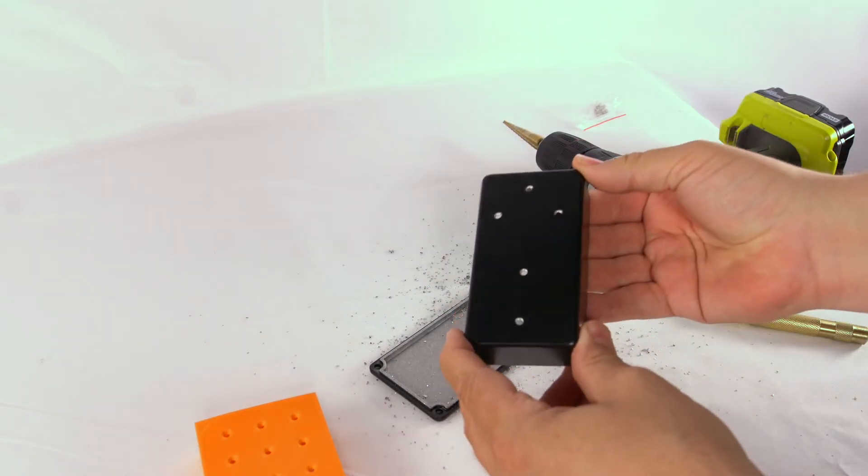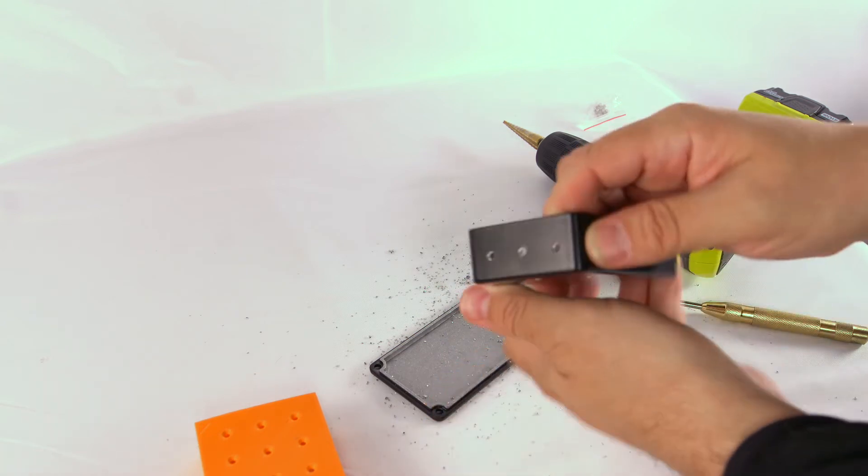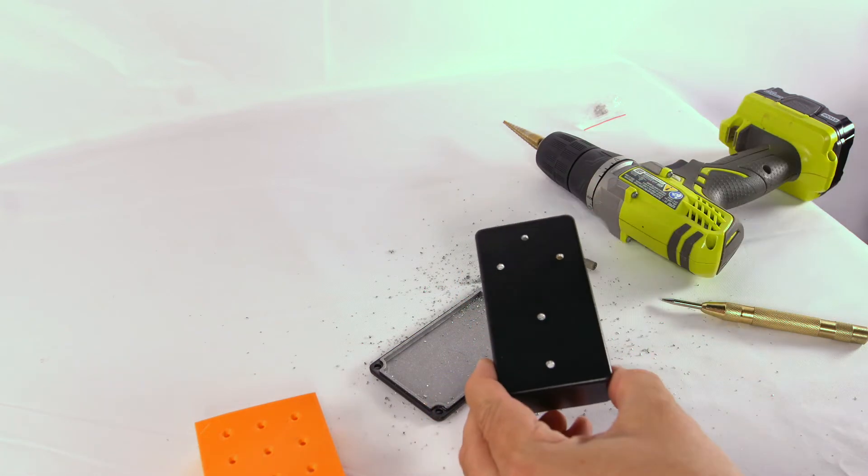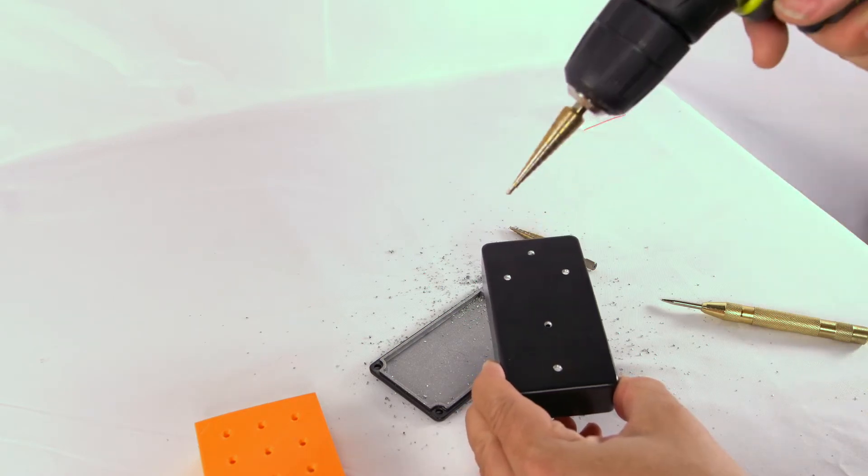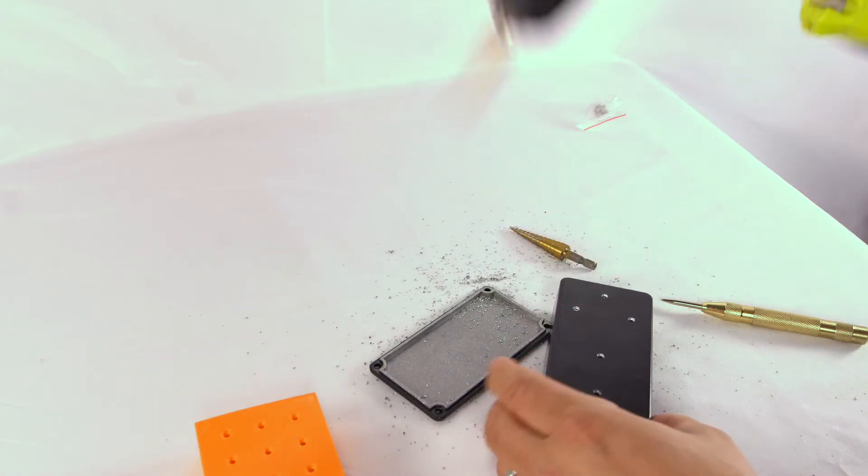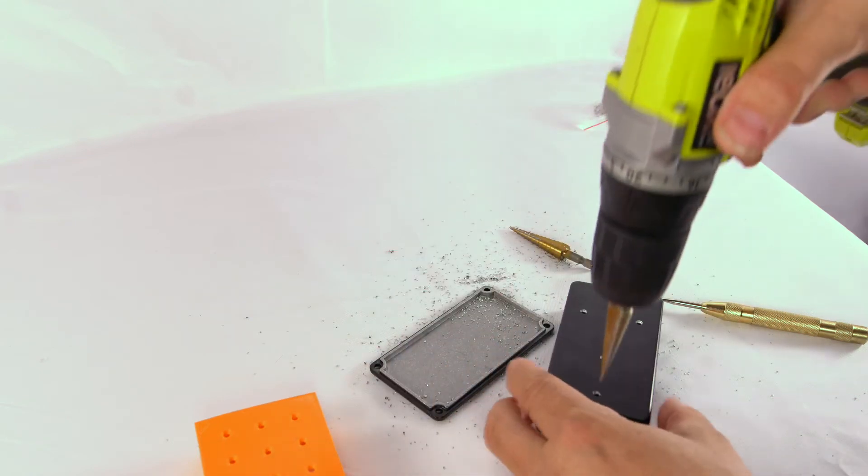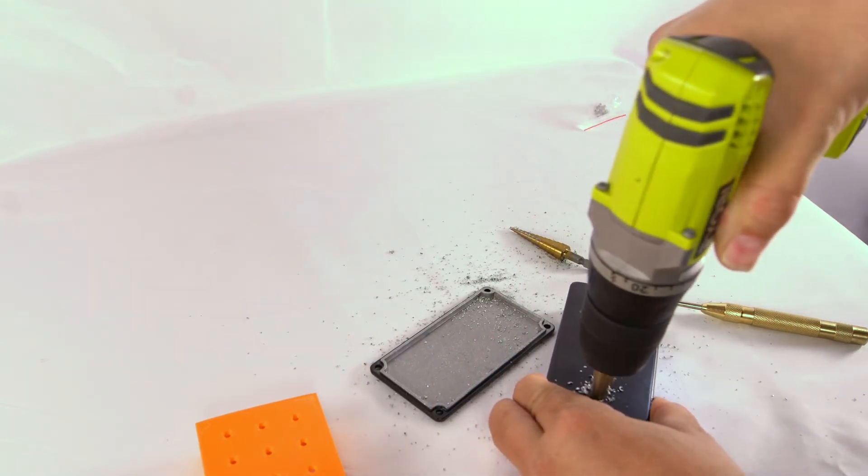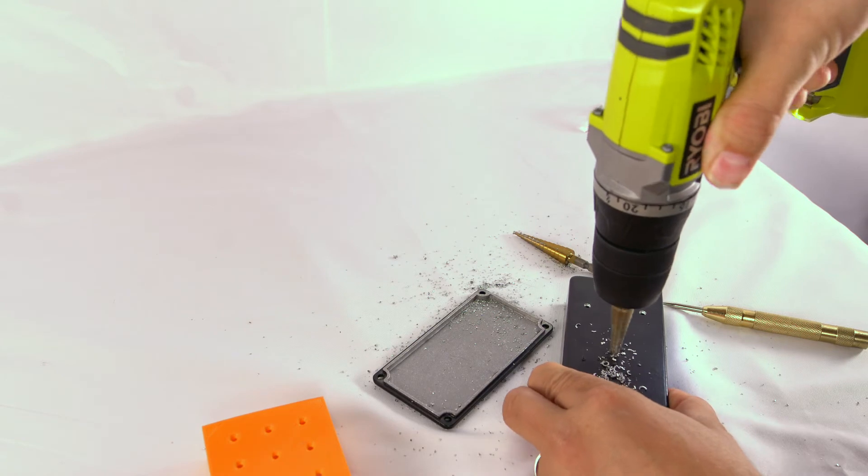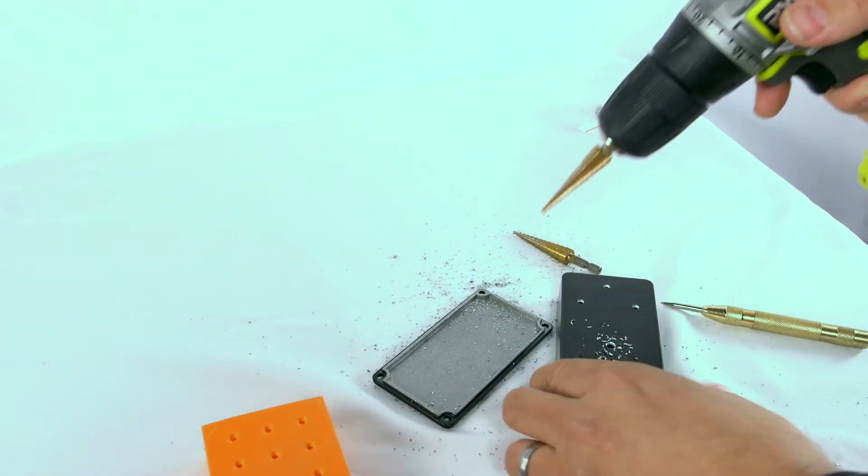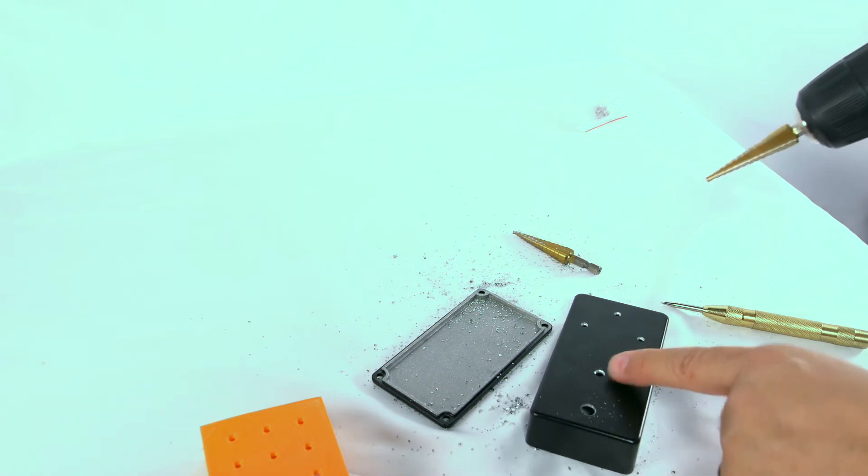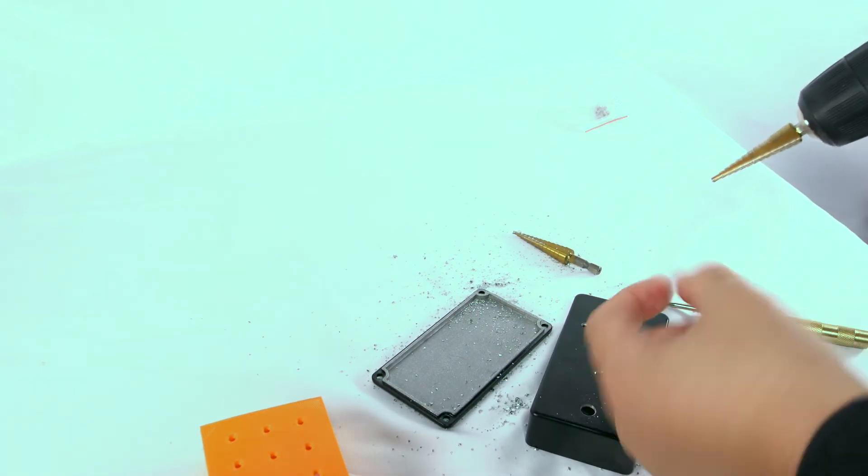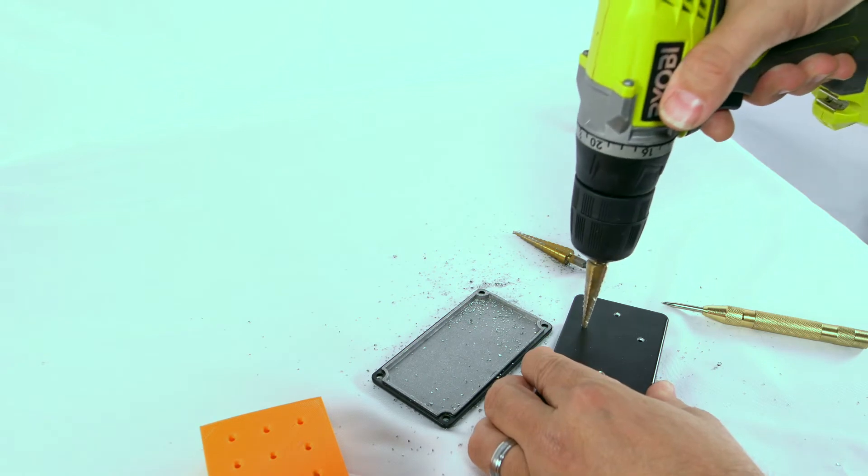So now we have some pilot holes drilled. And at this point, just take your step bit, I can't talk, and then you can enlarge the holes. Just go one step at a time. If need be, have your LED bezel and your pots nearby, just so you can kind of test the holes as you're going.